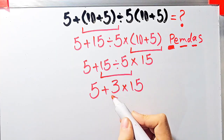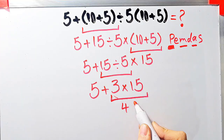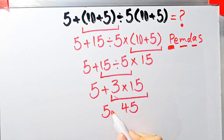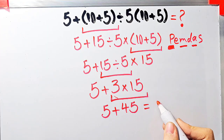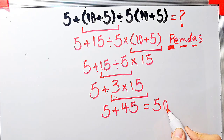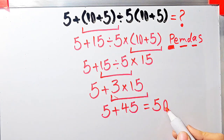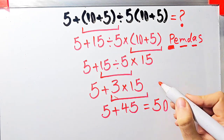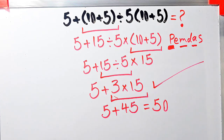3 times 15 equals 45. Now we have 5 plus 45, which equals 50. The final answer of this question equals 50. If you want to get the right answer you must follow the PEMDAS rule. Thanks for watching — subscribe to the channel to see more math videos.